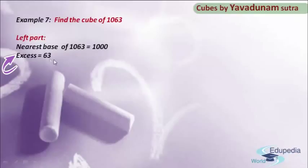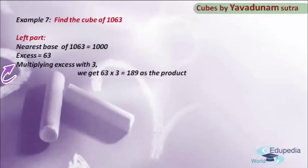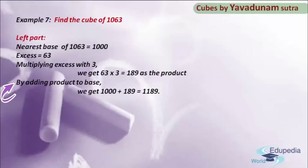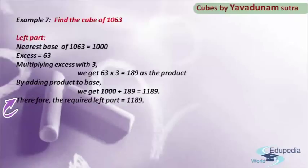After finding the excess, moving to step number 3: we have to multiply the excess with 3. So by multiplying 63 into 3, we get 189 as the product. After finding this product, we have to add it to the base. By adding 1000 and 189, we get 1189. This new sum 1189 is regarded as the required left part.